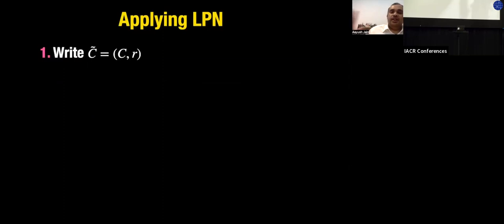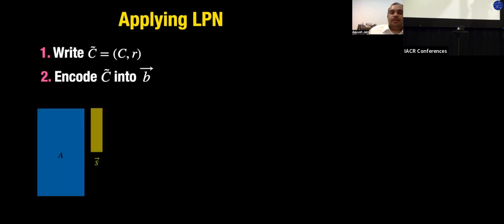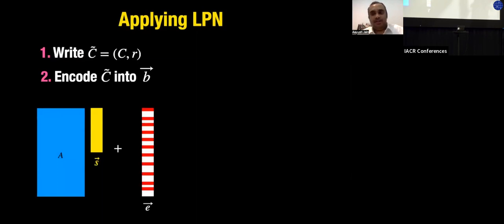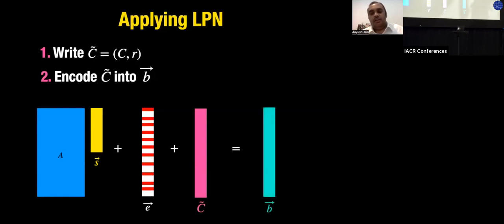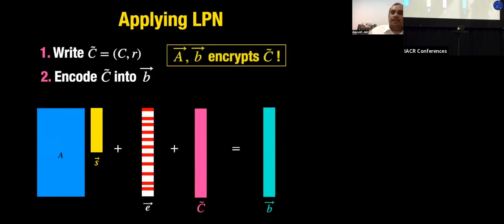For the first step, the idea is simply to use LPN to encrypt C̃. Recall LPN: As + e, where e is a sparse error, appears pseudorandom. We sample coefficient matrix A, multiply by a short-dimension secret s, add sparse noise e over Z_p, then add C̃ as a vector, forming vector b = As + e + C̃ mod p. Together, A and b encrypt (hide) C̃ because As + e is pseudorandom by the LPN assumption.